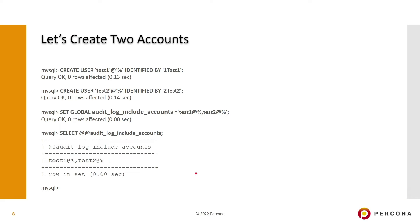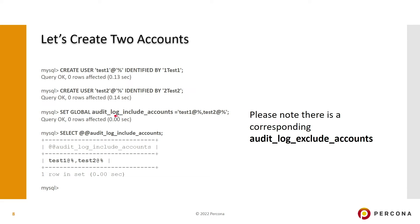Here's a quick example. Let's create two accounts: test1 and test2 with wildcard hosts. After creating those, type SET GLOBAL audit_log_include_accounts to include test1 and test2. Whatever these two accounts do will be logged until otherwise noted. You can verify this with SELECT @@audit_log_include_accounts. There's also an audit_log_exclude option — for most commands there are both include and exclude variants.